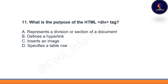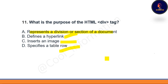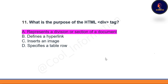Next question: what is the purpose of the HTML div tag? Option A is represents a division or section of a document. Option B defines a hyperlink. Option C inserts an image. Option D specifies a table row. The correct option is option A — the div tag represents a division or section of a document.